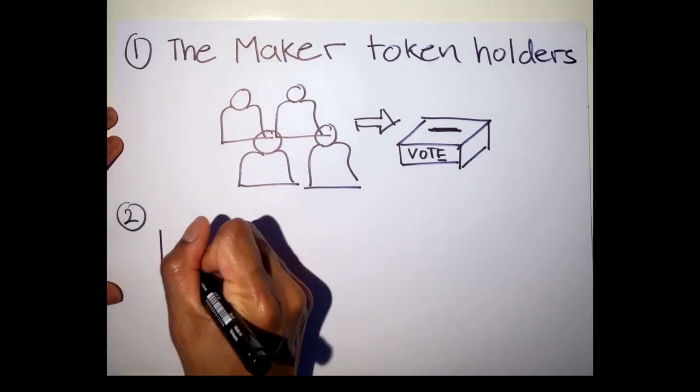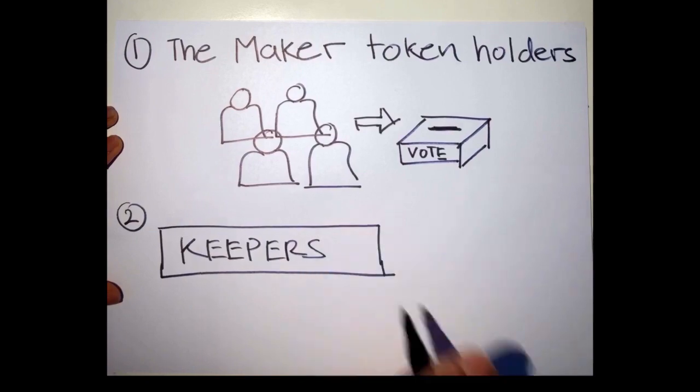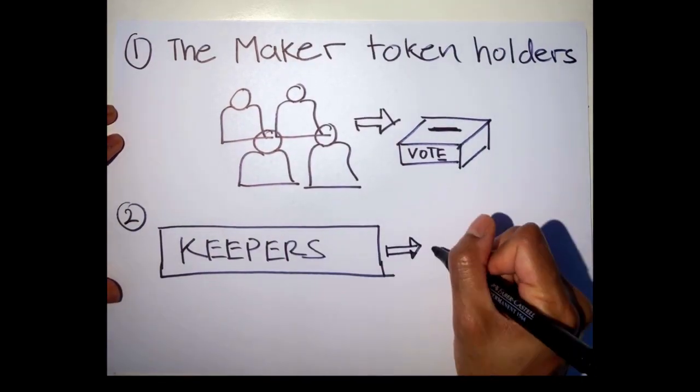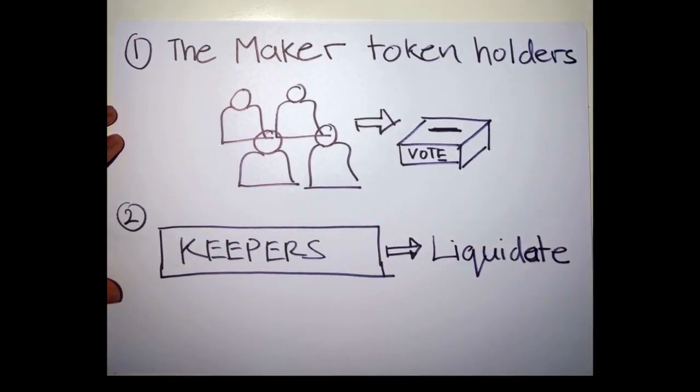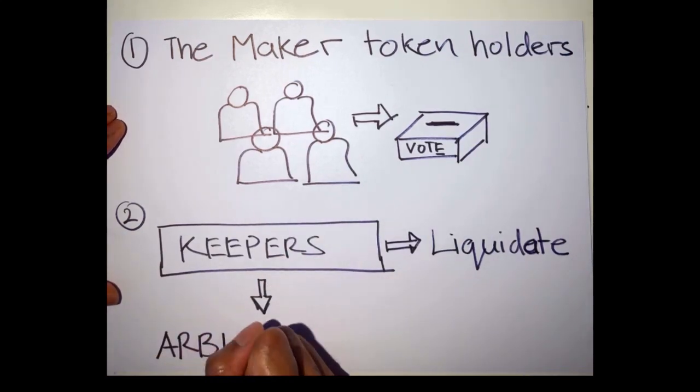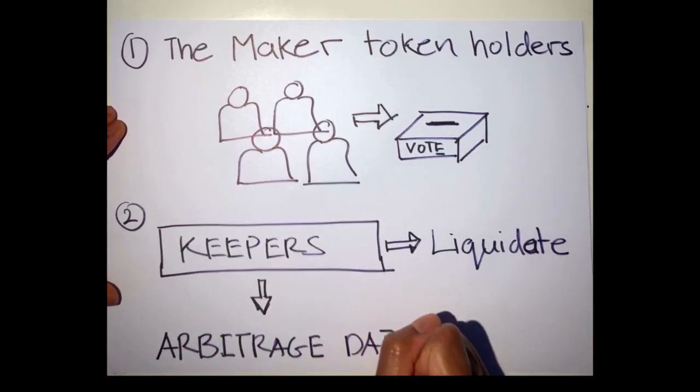Then we have the keepers, also known as the liquidators. Keepers maintain the stability of DAI by participating in the liquidation auction of MakerVaults and to arbitrage DAI to maintain its stability.